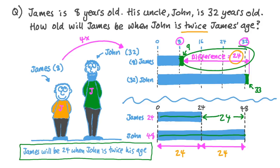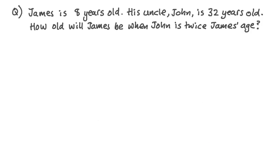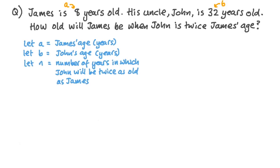OK, now let's rewind and do the puzzle again using algebra. James is 8 years old. His uncle John is 32 years old. How old will James be when John is twice James's age? First, let's define some variables. Let A be James's age in years, and let B be John's age in years. Now we can solve a general form of our problem. Think that James is A years old and his uncle John is B years old. How old will James be when John is twice James's age? Now we can let N be the number of years that must pass for John to be twice James's age.